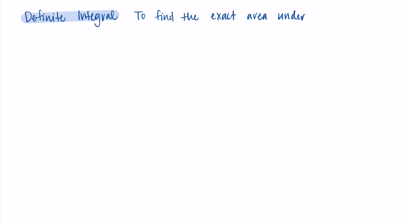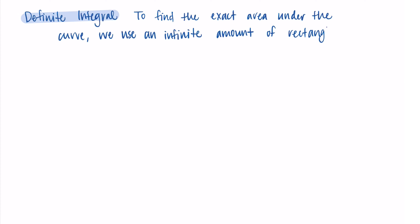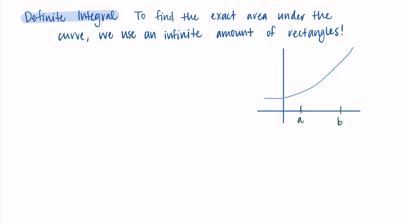We use the definite integral to find the exact area under a curve, and specifically what we're doing is taking an infinite amount of rectangles. Rather than having a set finite number of rectangles like we do with Riemann sums, we're going to send the number of rectangles to infinity. As we have more rectangles, the approximation becomes an exact value for the area under the curve because we are filling in all of that space. I've drawn here just a little picture to remind you how the rectangles look when we're using Riemann sums to fill in that area between an interval a to b.